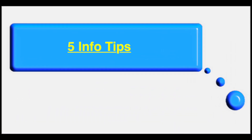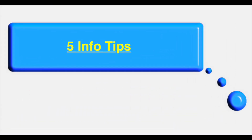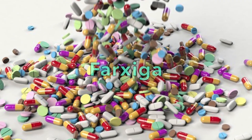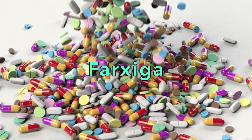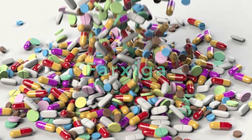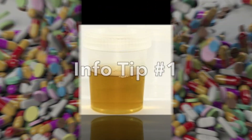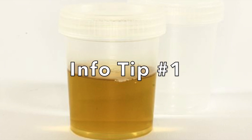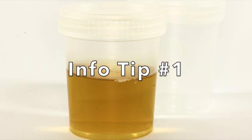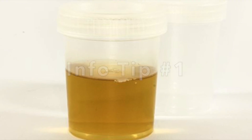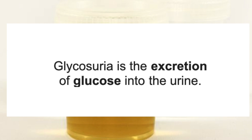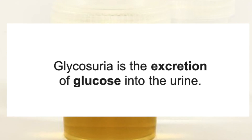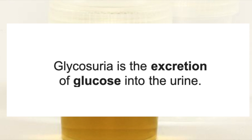For today's video I'm going to give you five information tips that you need to know about this medication. Info tip number one: this medication works by excreting excess glucose through the urine. This is often why you'll see a high urine glucose if you do a urinalysis — we call that glycosuria — in individuals who take this medication.